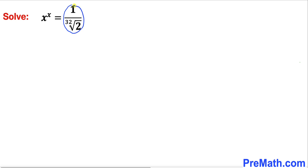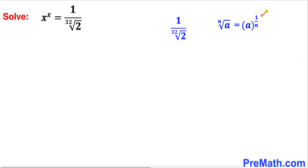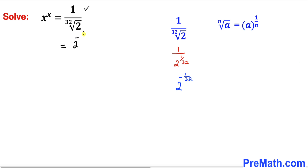Let's focus on the right hand side of this equation. Looking at the denominator, we apply the basic rule so this can be written as 1 divided by 2 power 1 over 32. Moving everything to the numerator, this becomes 2 power negative 1 divided by 32. Therefore the right hand side of this equation is 2 power negative 1 divided by 32, while the left hand side stays as x power x.